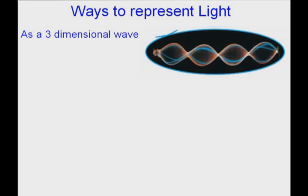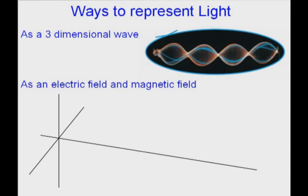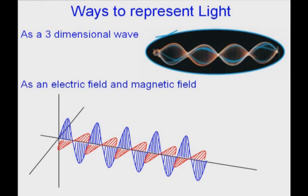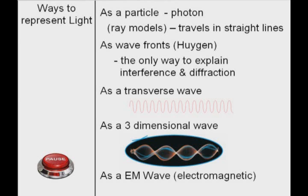We can also represent light as a three dimensional wave vibrating in all directions. And a new one that we'll get to in a couple weeks after we've done electricity and magnets is with electric and magnetic fields. Light creates an electric field which creates a magnetic field that are perpendicular to each other. And we'll see this drawing later on. Pause and copy.